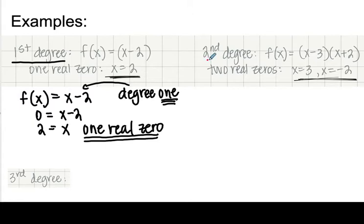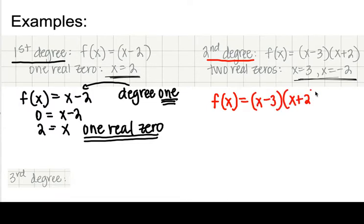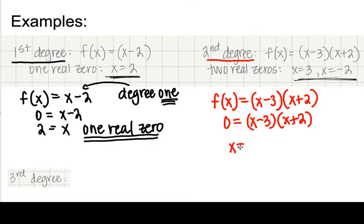Here we have a second degree polynomial. f of x equals x minus 3 times x plus 3. If I were to multiply out the x minus 3 and the x plus 3, we would have x squared — so this is a degree two. When I put zero in for y and solve using the zero product property, I get two zeros — two real zeros.